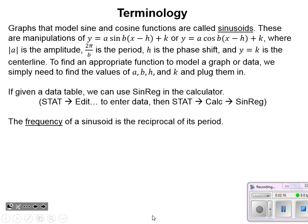All they've done is taken that b value — which was determining how fast the function moves — and factored it out as a GCF. It's all still inside the sine or cosine function, but they factored it out so that we can see the shifts a lot easier.